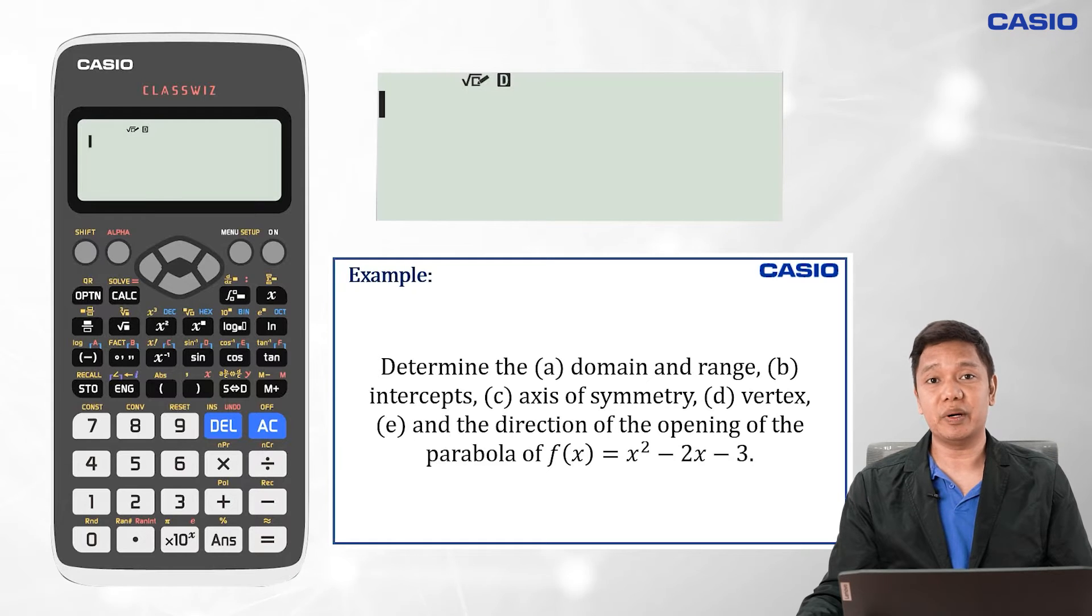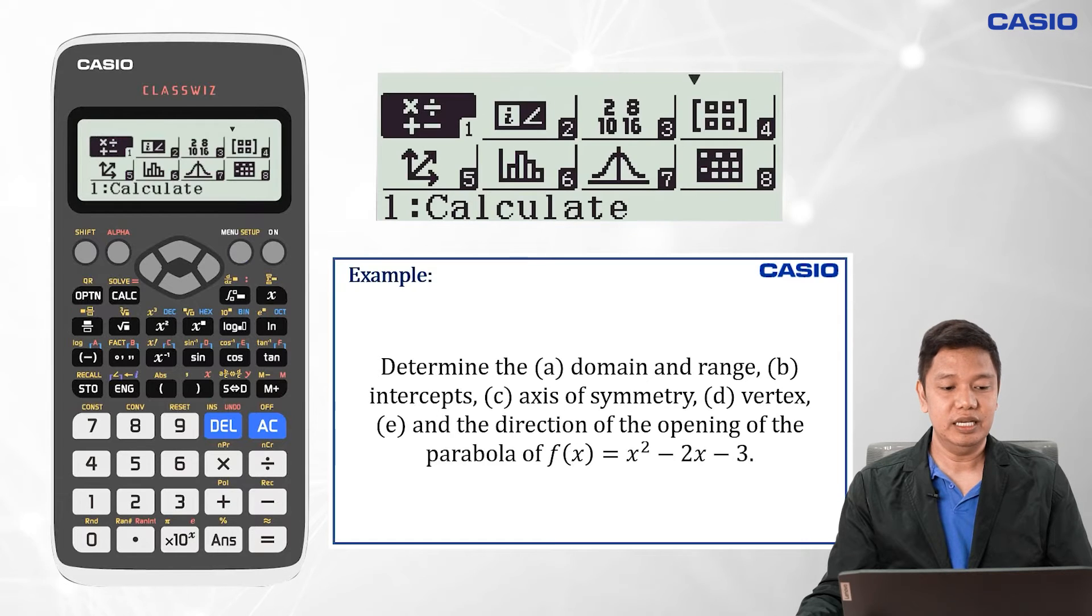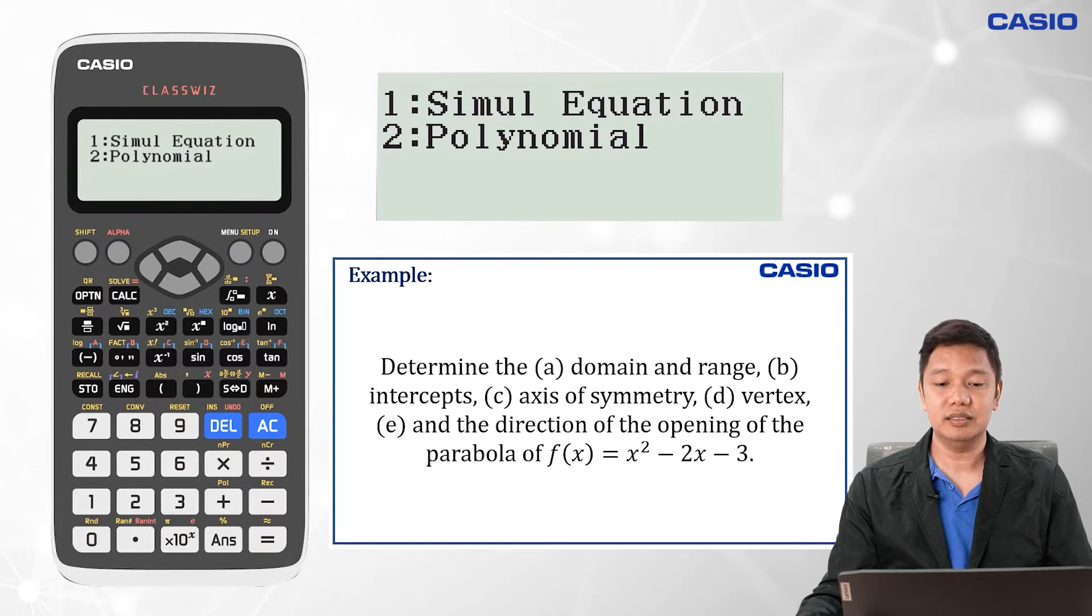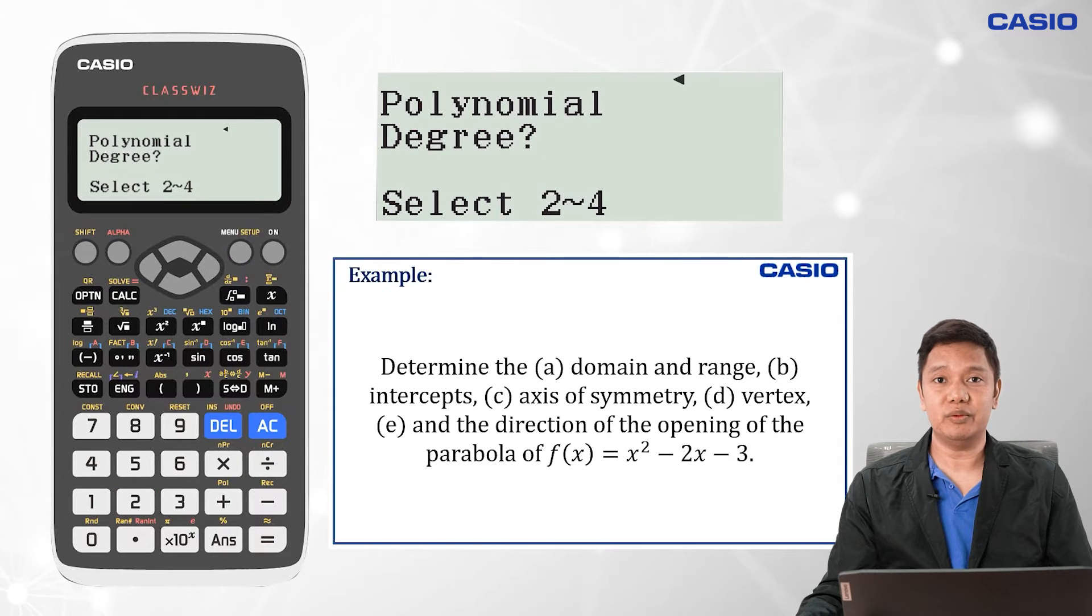We also need the vertex of the parabola and the direction of the opening. To do so using our Casio calculator, we need to press Menu, then the negative button for Equation, then press 2 for polynomial equation, and since our degree is 2, we press 2.